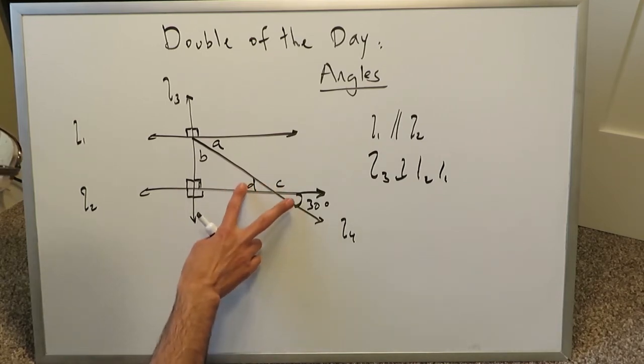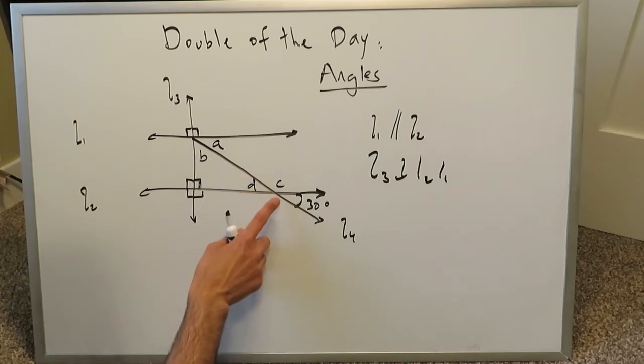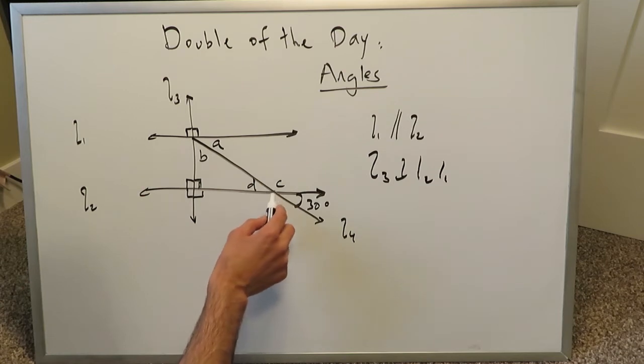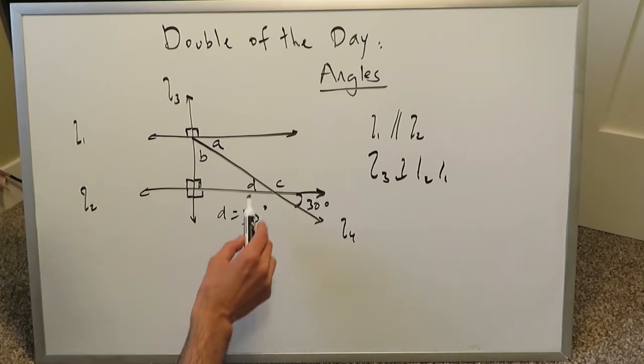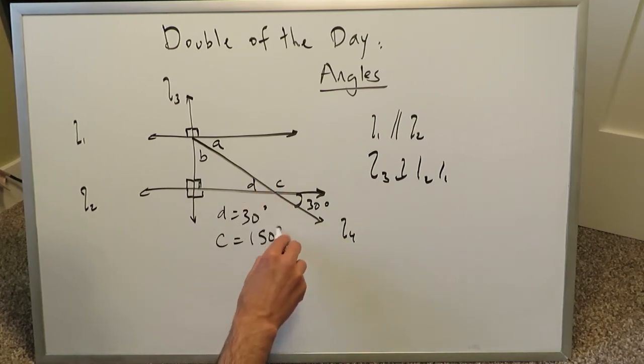You can use the property of opposite angles right here. This must be opposite and equal to that because D and this 30 are opposite to one another, both opposite in terms of this vertex over here. Intersection of these two lines, we know that D must equal to 30 degrees. That's a good fact. And then we know that D and C are supplementary angles, two angles which add up and equal to 180. If D is 30, then C must be 180 minus 30 and it must make it 150 degrees.